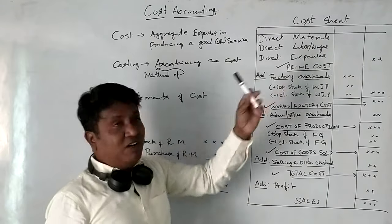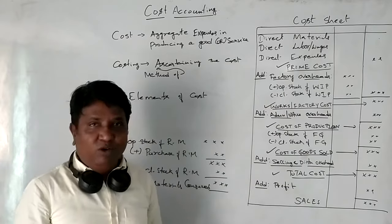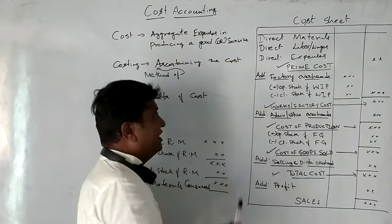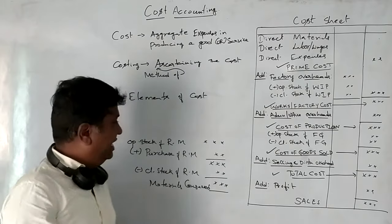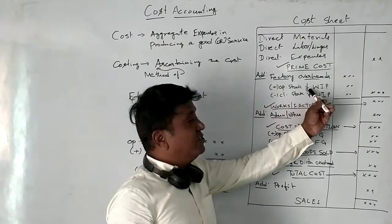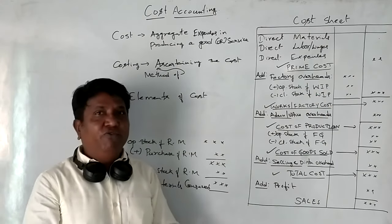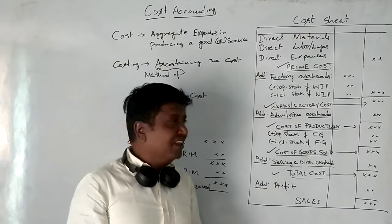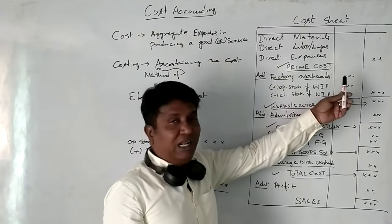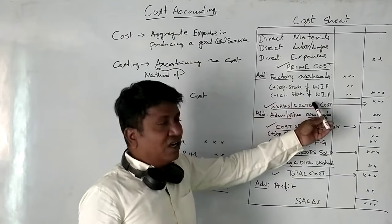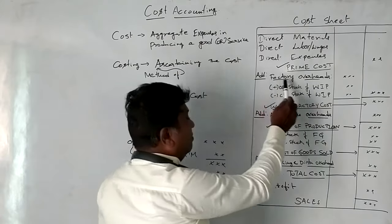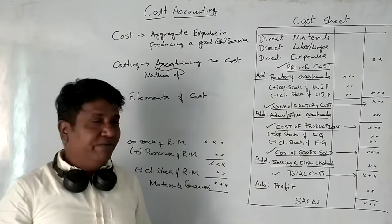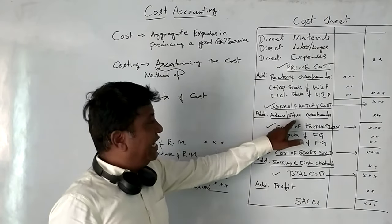Prime Cost plus factory indirect expenses gives Works Cost. We also adjust for the opening and closing stock of work in progress. Prime Cost plus factory overhead, adjusted for work in progress, gives us the Works Cost or Factory Cost.